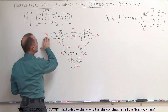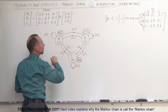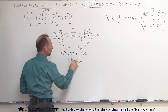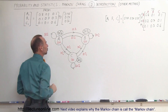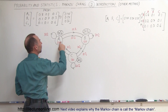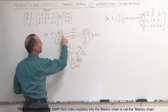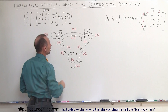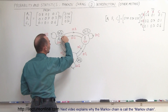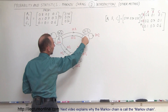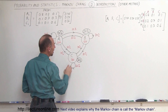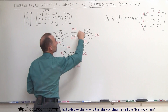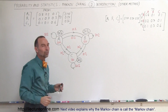Notice that 80% will stay in store A for the following week, 70% will stay in store B, and 60% will stay in store C. At the same time, from A, 10% will go to B and 10% will go to C. From store B, 20% will go to A and 10% will go to C. And from store C, 10% will go to A and 30% will go to B.